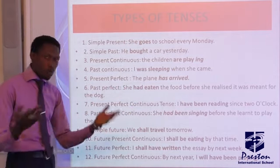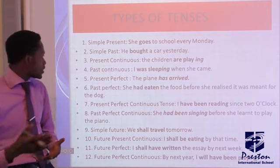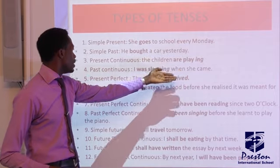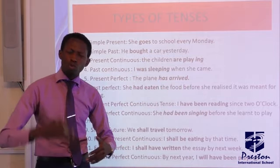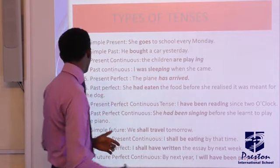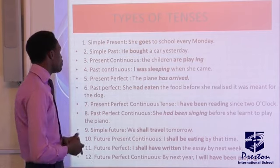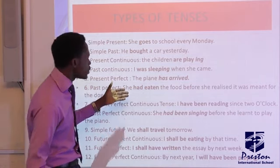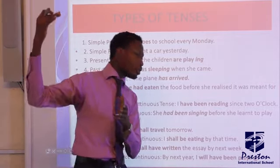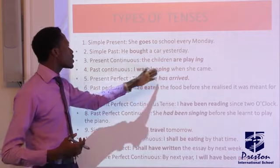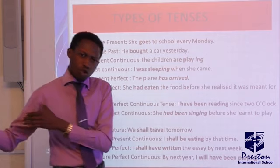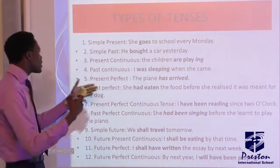The present continuous, also called the present progressive, refers to an action that is progressing right now — for example, 'The children are playing.' The past continuous talks about an action that started in the past and continued to a particular point in the past — for example, 'I was sleeping when she came.'